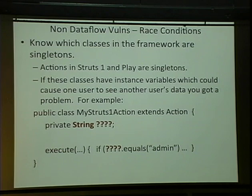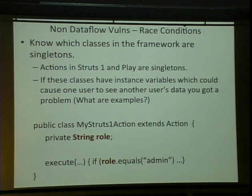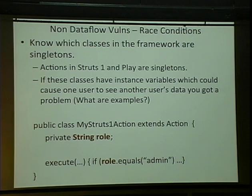Race conditions: a lot of frameworks have singletons by default. Bad values for the question mark fields would be things like ID, username, role. If the action class is a singleton, multiple threads are calling execute at the same time with only one instance variable for the class. Two threads could come into execute, set the role — the latter role gets set by an admin — and the first thread now becomes an admin and starts executing its code.